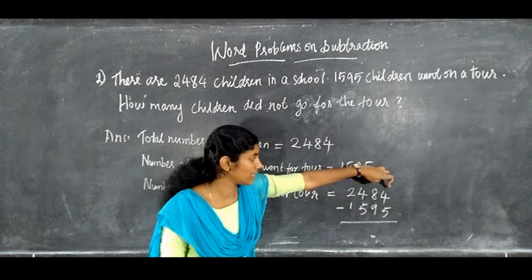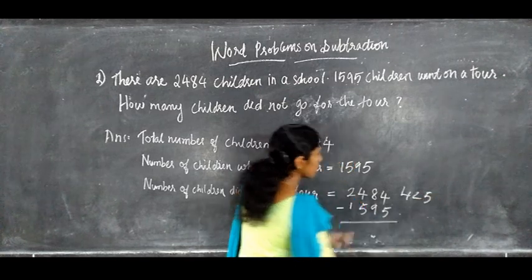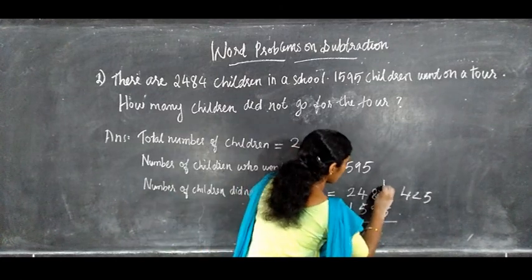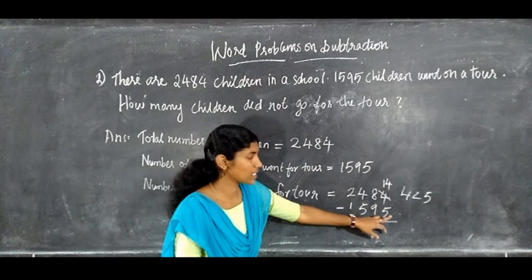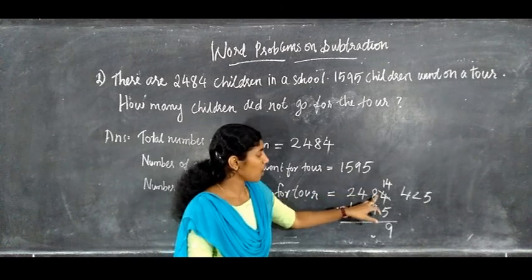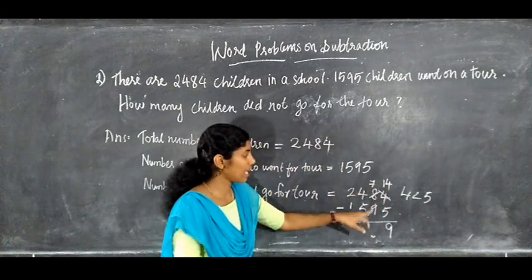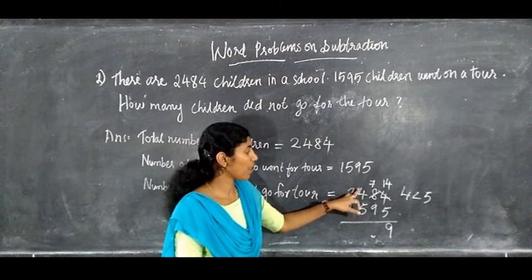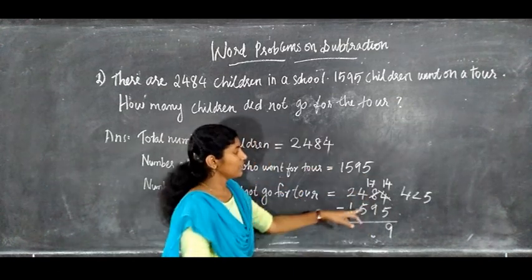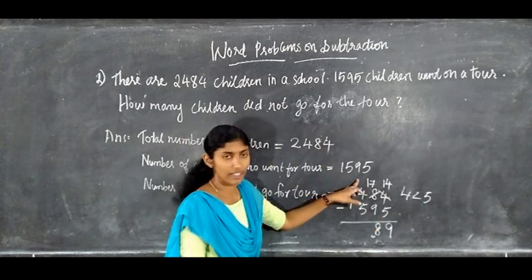First subtract the ones: 4 minus 5 is not possible since 4 is less than 5. So we borrow 10 from the tens column and regroup the ones column as 14. Then 14 minus 5 gives 9. Then subtract the tens: since one 10 was borrowed, we have only 7 left. Since 7 is less than 9, we borrow 100 from the hundreds column and regroup the tens column as 17. Then 17 minus 9 gives 8.